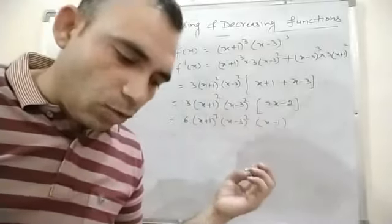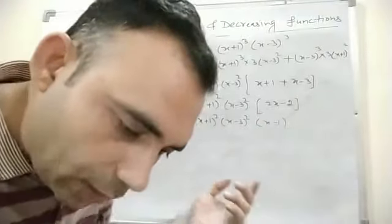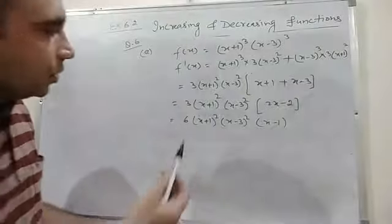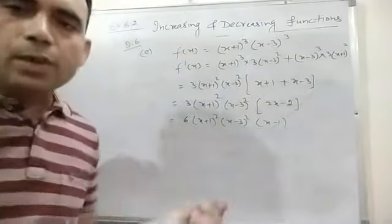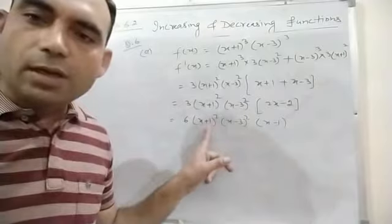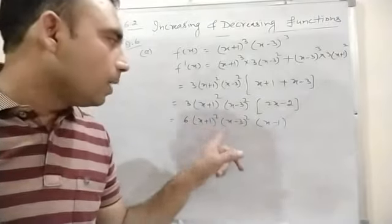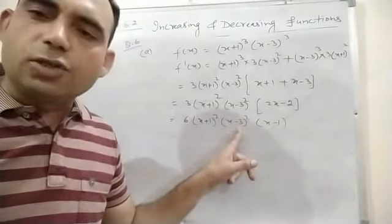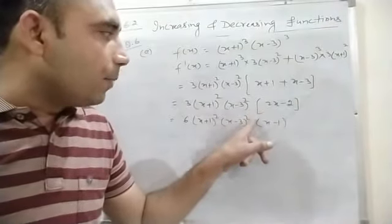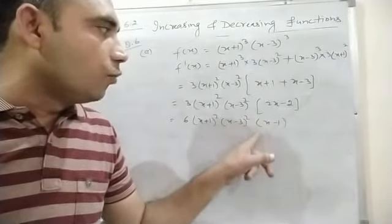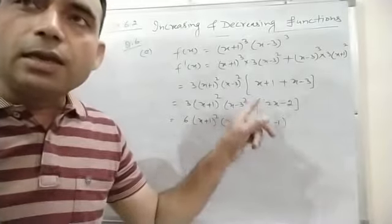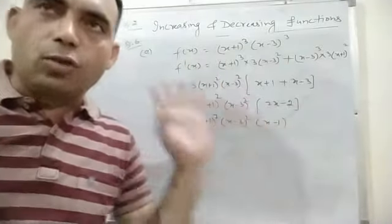Now find intervals for strictly increasing and strictly decreasing. Notice that (x + 1)² is always positive — it's a whole square, so whatever the value of x. Similarly (x - 3)² is always positive. So the sign of f'(x) depends only on (x - 1). The interval breaks only at x = 1.